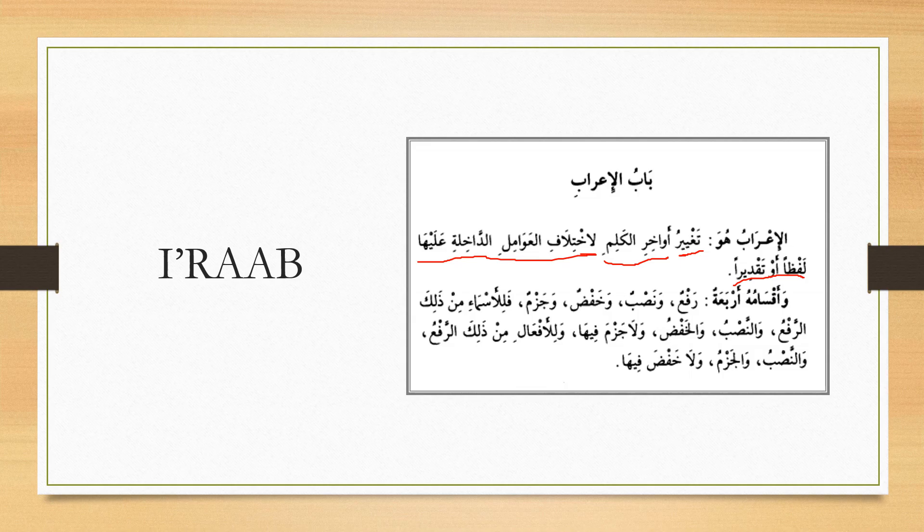The author then mentions the categories of al-I'raab, and where these four categories apply with respect to أسماء and أفعال. When it comes to رفع and نصب, they enter upon both أسماء and أفعال. As for خفض, it is specific to أسماء, and جزم is specific to أفعال.